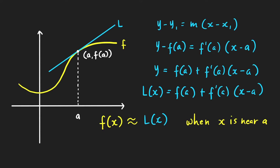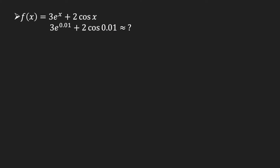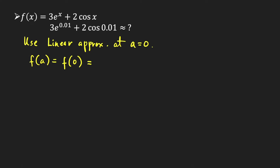Let's now go back to our three problems. First, let's approximate the value of 3e raised to 0.01 plus 2 cosine of 0.01. Since the value of x here is 0.01, which is close to 0, we can use the linearization of the function f at a equals 0. So let's use linear approximation at a equal to 0. We have f of a equal to f of 0, which is 3e raised to 0 plus 2 times cosine of 0, so that is 3 plus 2, which equals 5.